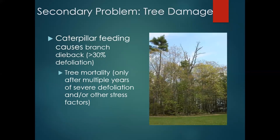The secondary problem is that browntail is a minor forest pest, and it typically alone does not cause mortality in trees. Trees are very tolerant of defoliation, particularly oaks — they can survive multiple years of defoliation and be just fine. Two things that compound that in Maine are other pest issues such as gypsy moth or winter moth also attacking the trees, as well as the drought we've had in Maine for the past few years, which has stressed the trees out.